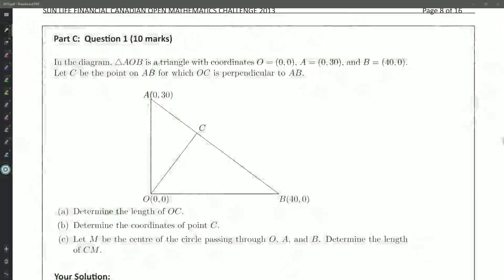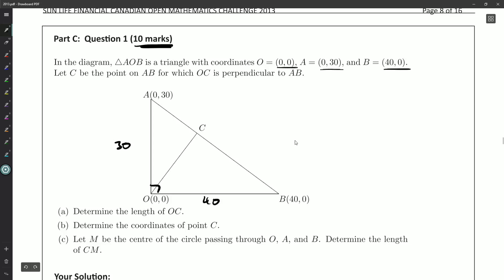Hello ladies and gentlemen, welcome back. We're starting Part C of our 2013 open paper. Just a reminder: these last four questions, the Part C questions, require full explanations, justification, citing any theorems, showing your calculations, explaining your reasoning—all that stuff is required to get the marks. We're going to look at C1. This is probably the easiest of them and certainly easier than some of the B part questions, but it's worth 10 marks, so we do still want to be careful and write everything down. In the diagram, AOB is a triangle with O at (0,0), A at (0,30), and B at (40,0). So already I know some side lengths and this is going to be a nice little right angle triangle. Let C be the point on AB for which OC is perpendicular to AB.